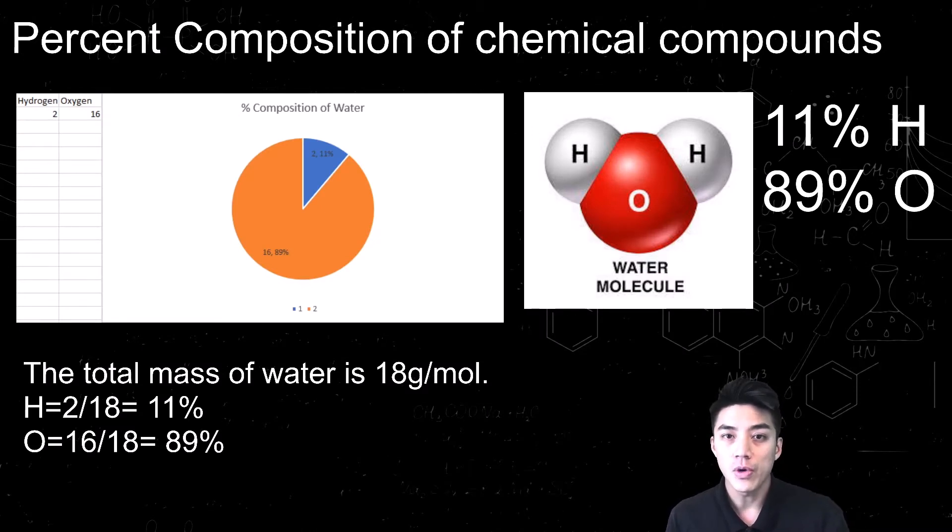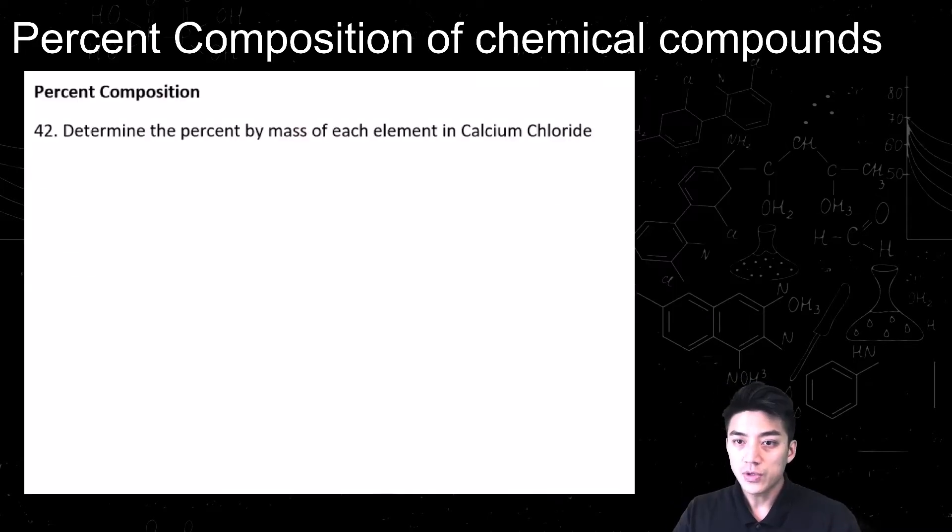For example, if you wanted to find the percent composition of water, you would take 2, which is the mass of hydrogen, divided by 18, which is the total mass of water. You would then get 11% is hydrogen, and the other 89% is oxygen by mass.